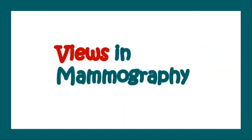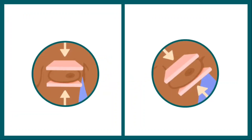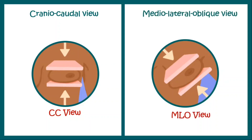Now let us understand what are the views of a mammography. Based on compression of the breast tissue, we can have two sorts of views. One is known as a cranio-caudal view, also known as CC view, and another one is a medial lateral oblique view, also known as MLO view. In the cranio-caudal view, the x-ray beam travels from the cranial end (head end) to the caudal end (tail end). In the case of an MLO view, the x-ray beam travels from medial to lateral in an oblique fashion.